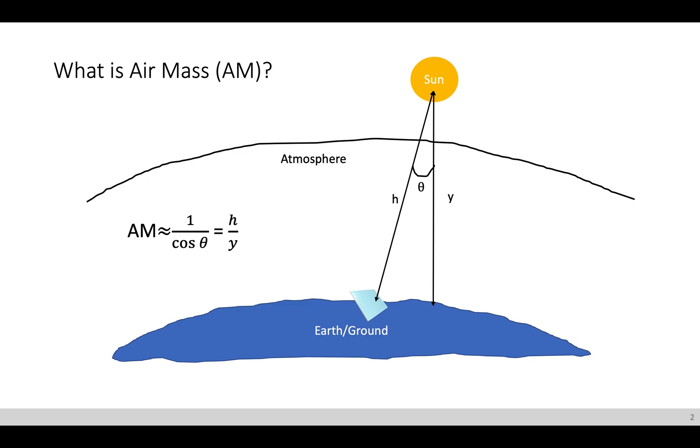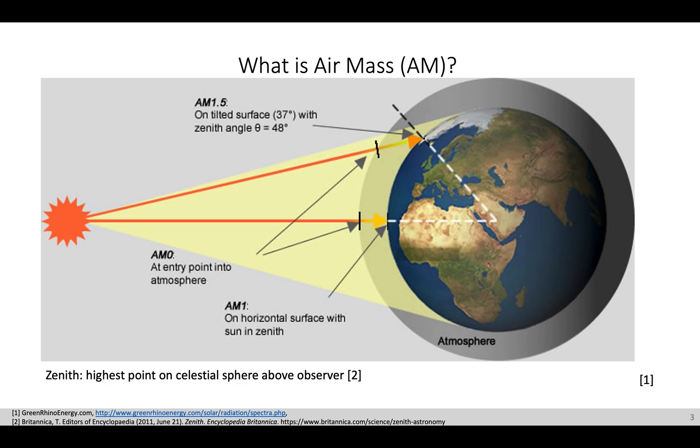To look at this at a different angle, we can also look at this diagram, where we see the different AM, or air masses, at different levels. And so AM is zero in the center, means that AM is equal to zero. And so if we look at the AM equation, this means that theta needs to be 90 degrees. This means that we are measuring light incident at the entry point of the atmosphere, as shown in the middle arrow.